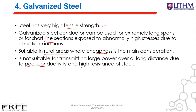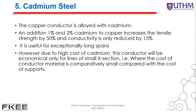Now let's see cadmium copper. The copper conductor is alloyed with cadmium. Adding 1–2% cadmium to copper increases the tensile strength by 50%, while conductivity is reduced only by 15%. It is useful for exceptionally long spans. However, due to the high cost of cadmium, its use is economically justified only for lines of small cross-section where the cost of conductor material is comparatively small compared with the cost of the supports.